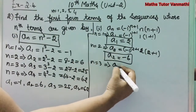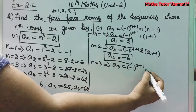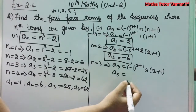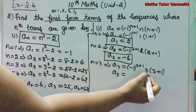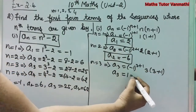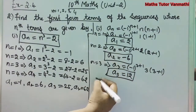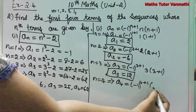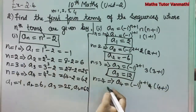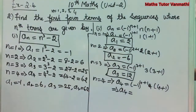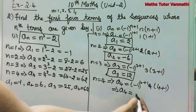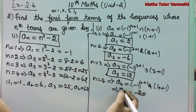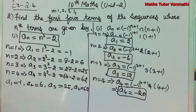For n = 3: a_3 = (-1)^4 · 3(3+1). Even power gives positive answer: a_3 = 3 × 4 = 12. For n = 4: a_4 = (-1)^5 · 4(4+1). Odd power gives negative: a_4 = -4 × 5 = -20. These are the values a_1 = 2, a_2 = -6, a_3 = 12, a_4 = -20.